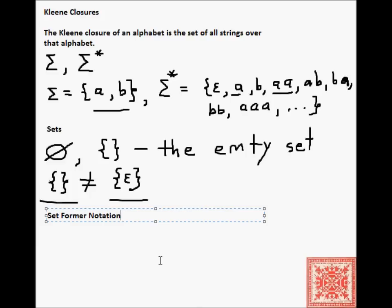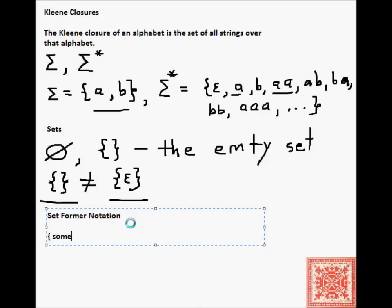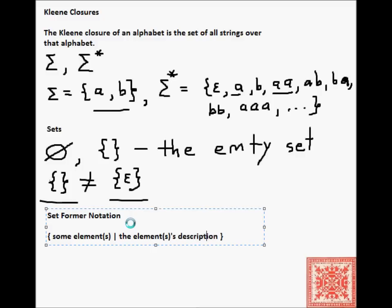Another thing that is very helpful is known as set-builder notation, which you've probably seen if you've been exposed to some discrete mathematics or elements of set theory. You have curly braces which characterize a set, separated by a vertical bar. On the left of that bar are the names of the elements of the set, and to the right of that vertical bar is some characteristic or description that states which elements belong to that set.